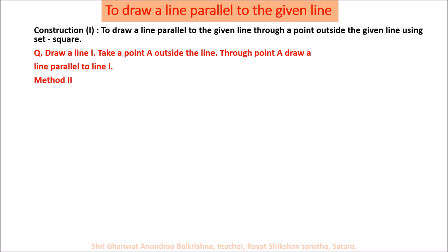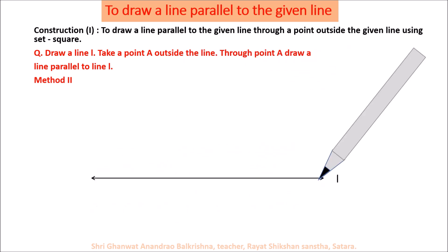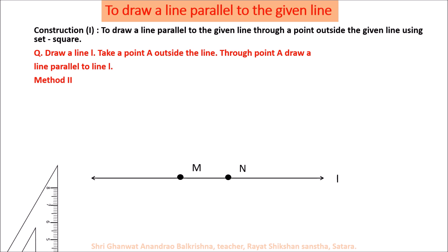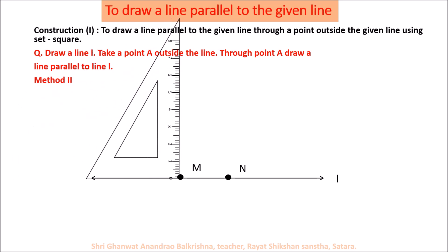Now the geometric construction using another method — method two. Again take a ruler and draw line L. We have to take a point M on line L and another point N on line L, meaning we have to take two distinct points on line L. Now use a set square and draw a perpendicular to line L through point M.